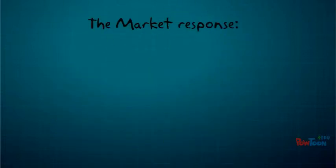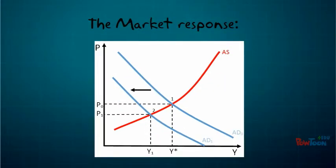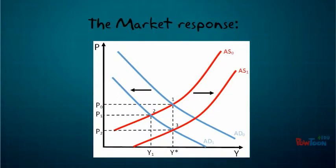The market will also respond to this output gap, with excess supply of factors putting pressure on wages and other factor prices to fall. The decrease in factor prices will shift the aggregate supply curve to the right to close the output gap.